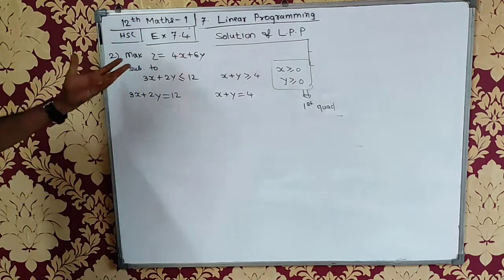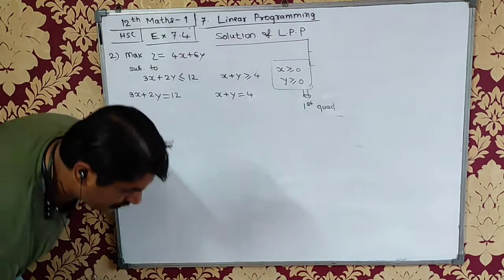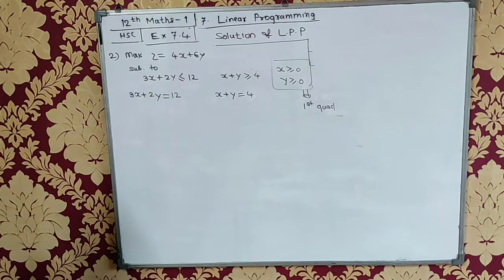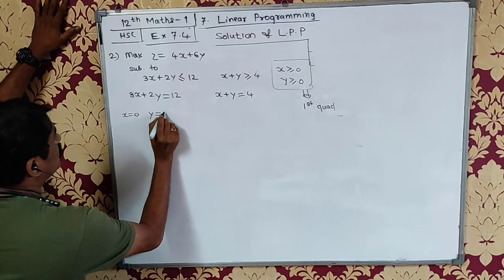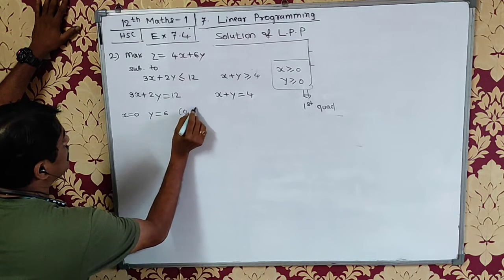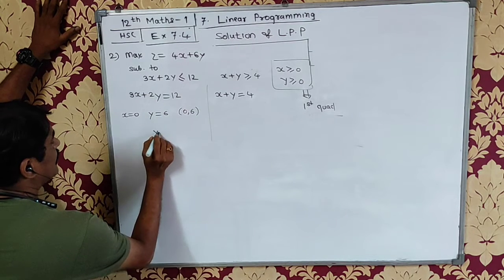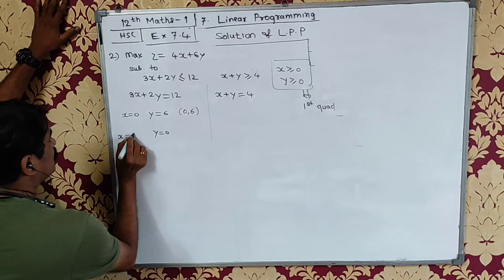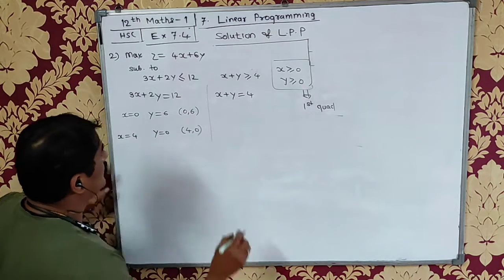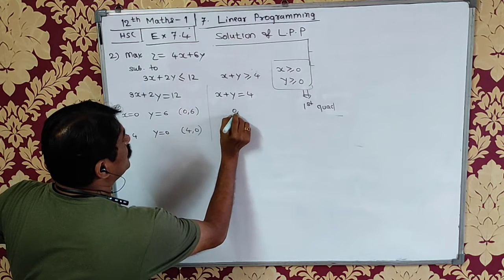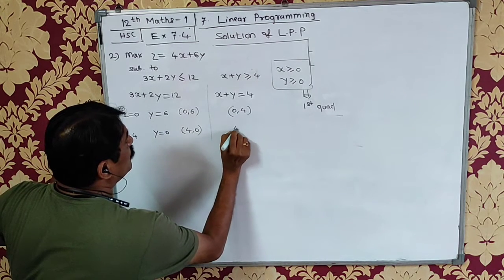In the previous exercise, we have done two lines. Put x equals 0, I will get y equals 6, so it will be (0,6). Similarly, put y equals 0, I will get x equals 4, so this is (4,0). Similarly, it will be (0,4) and (4,0).